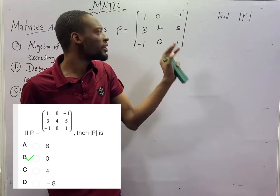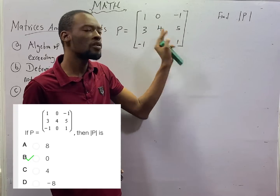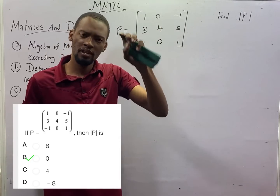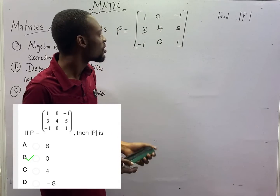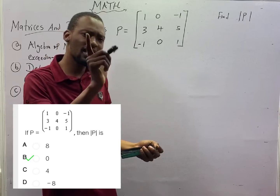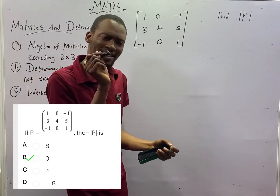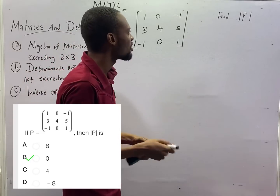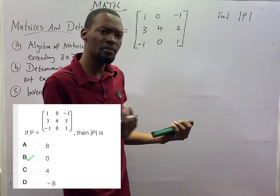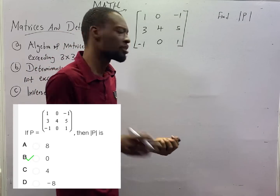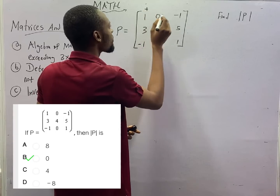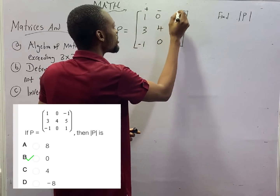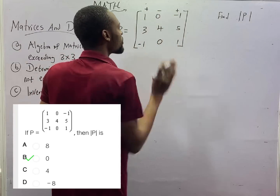JAMB will not ask you for the inverse of 3×3 matrices. The first step to find determinants of 3×3 matrices is this: put plus here, put minus here, put plus here — the plus-minus-plus sign pattern across the first row.